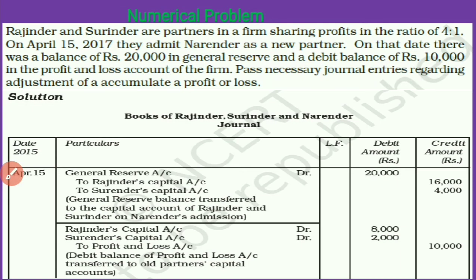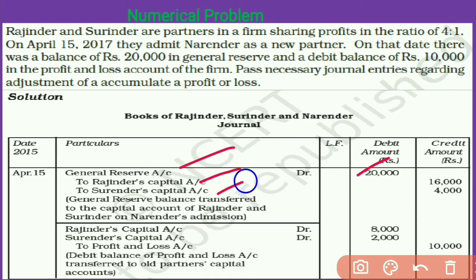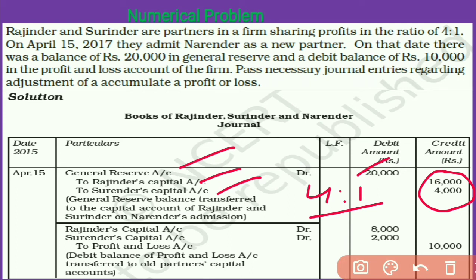General reserve account is debited for rupees 20,000. Old partners — Rajinder and Surrender — Rajinder's capital account is credited and Surrender's capital account is credited. The entry is: General Reserve Account Dr. 20,000 — To Rajinder's Capital Account, To Surrender's Capital Account. This credit to partners is in their old profit sharing ratio of 4:1, that is 4/5 and 1/5.